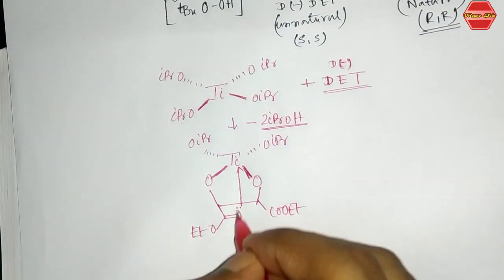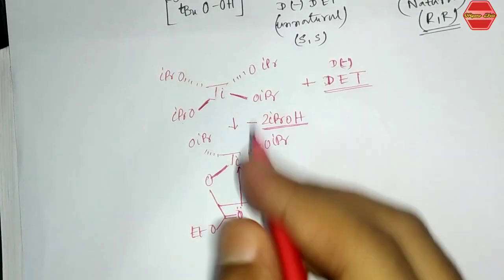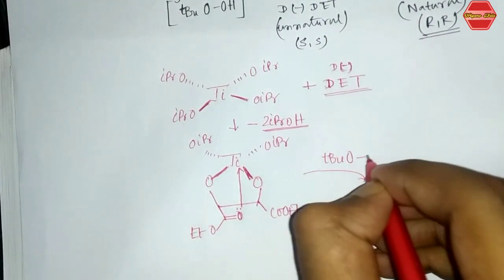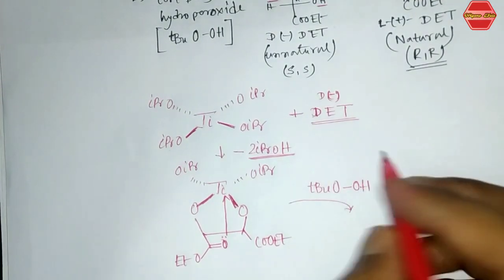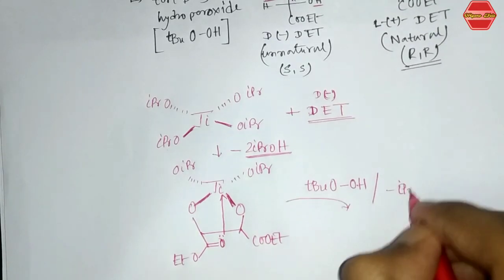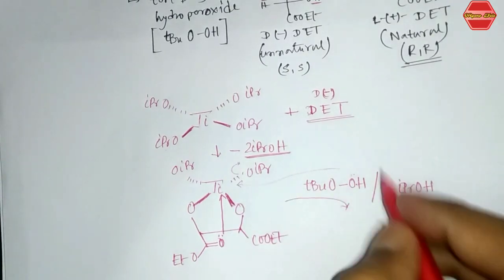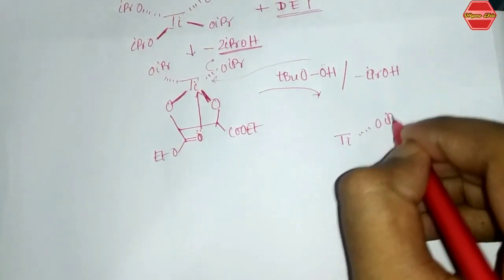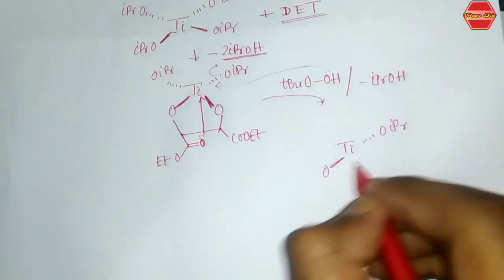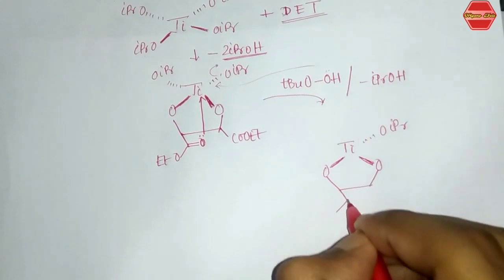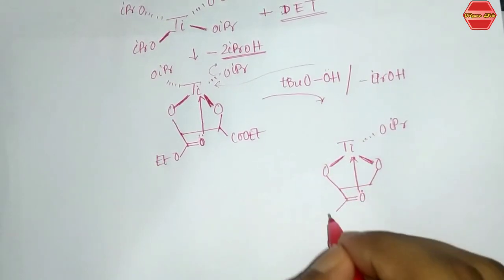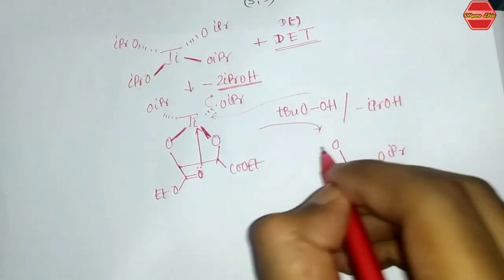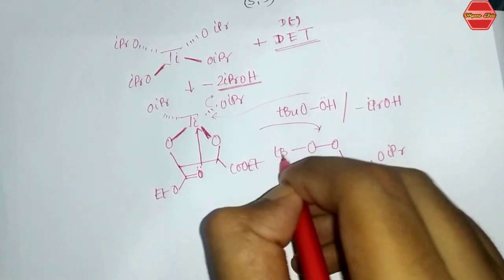The DET is coordinated with the titanium center through the lone pairs of its oxygen atoms. Next, tert-butyl hydroperoxide (TBHP) is added. One more isopropyl group leaves the system, and the TBHP oxygen coordinates to the titanium center, replacing it. The product has OiPr, the DET oxygen, and the tBuO–OH fragment all coordinated.